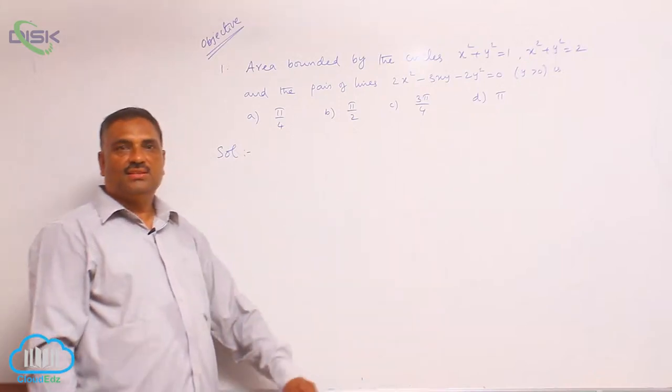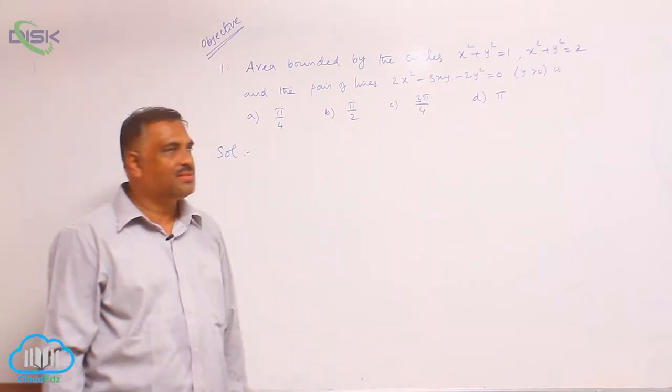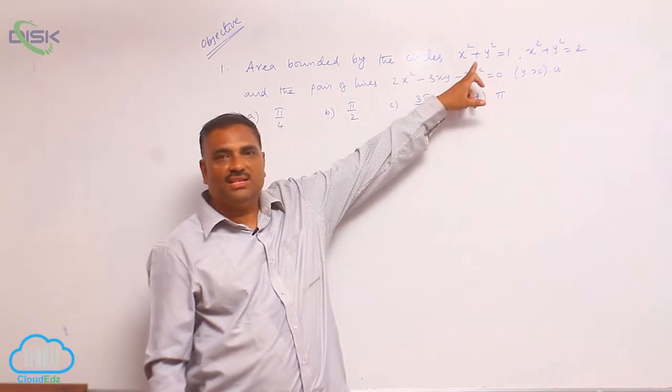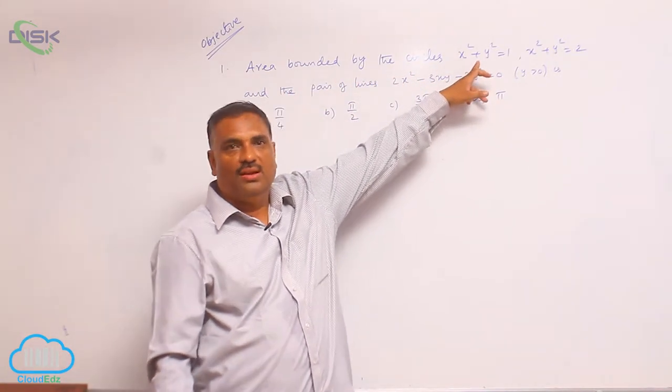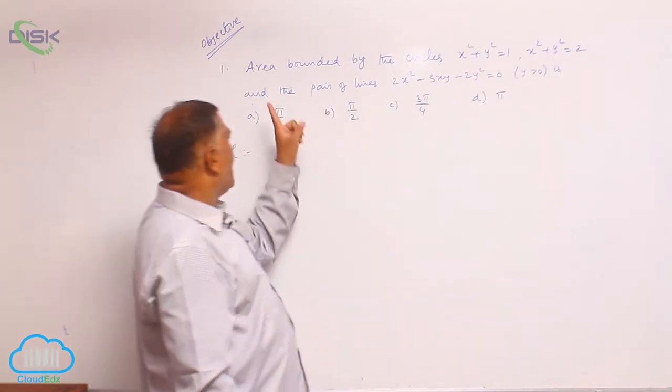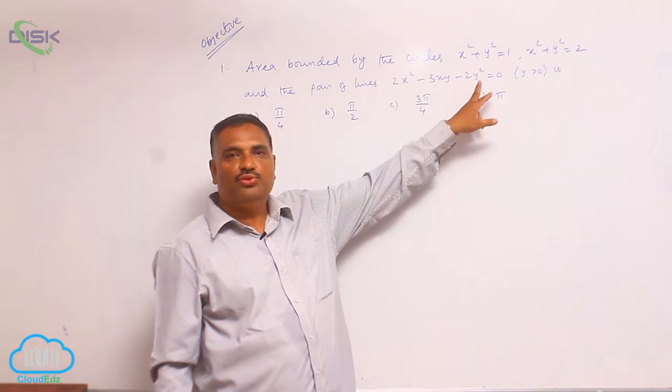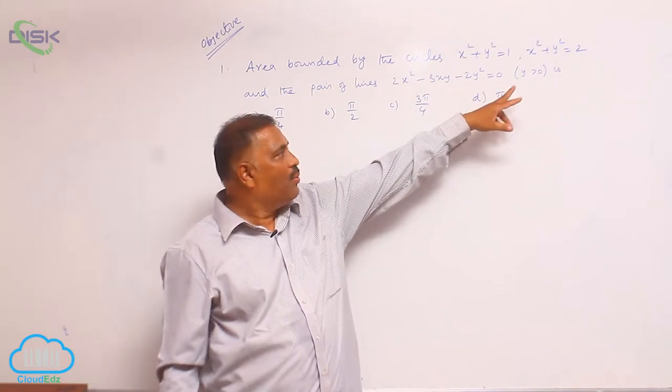Based on this concept, let us discuss a few objective problems. The first one: area bounded by the circles x square plus y square equal to 1, x square plus y square equal to 2, and the pair of lines 2x square minus 3xy minus 2y square equal to 0, y greater than 0.